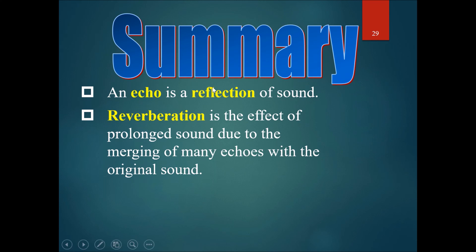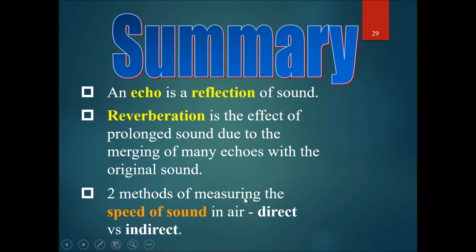In summary, an echo is a reflection of sound. Reverberation is the effect of prolonged sound due to the merging of many echoes with the original sound. Two methods of measuring the speed of sound in air: the direct one and the indirect one.